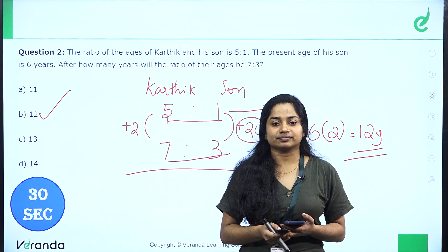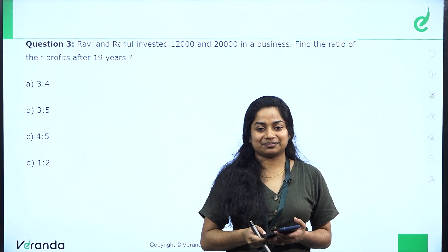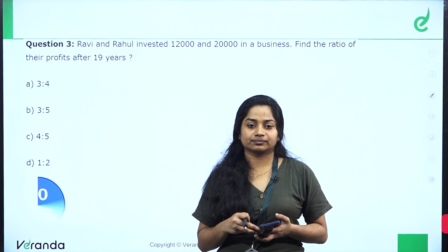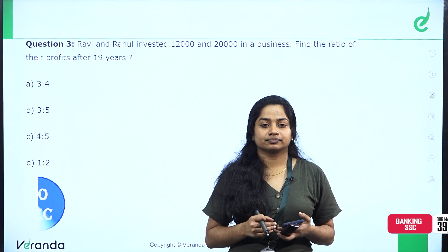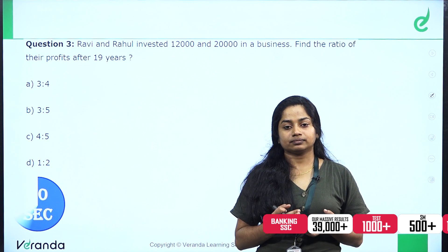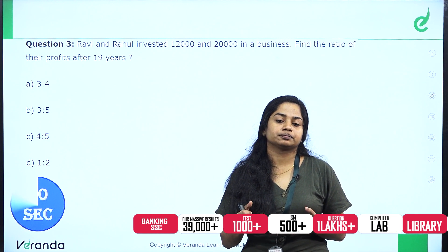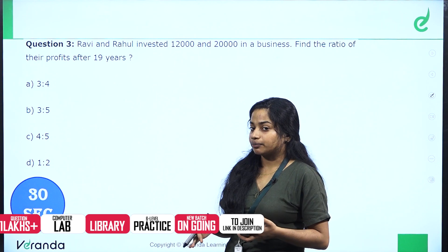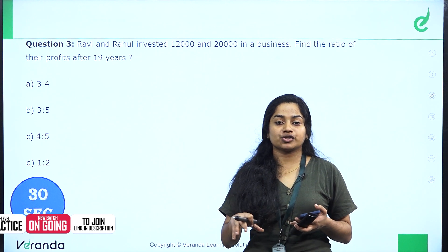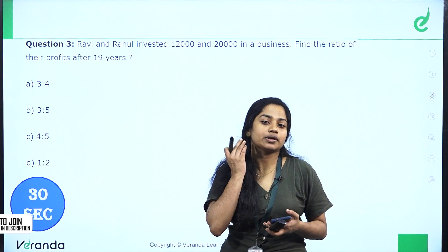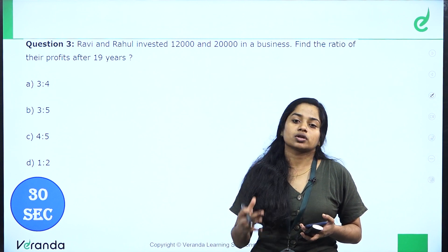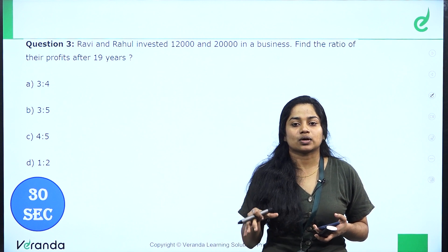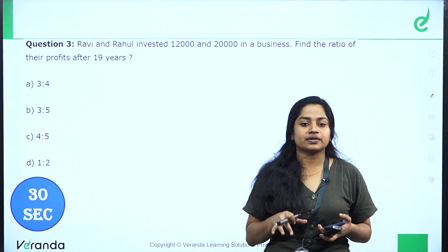Timer is starting. 30 seconds — this is the last topic about partnership. We will see the next question on the basic items of partnership. Ravi and Rahul invested 12,000 and 20,000 in a business. Find the ratio of their profits after the same period.